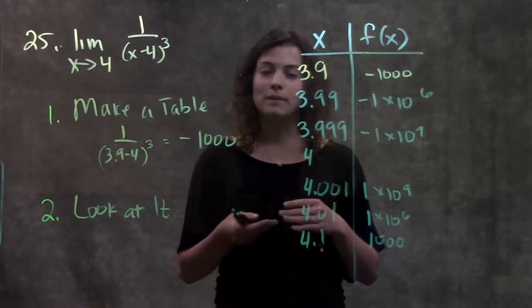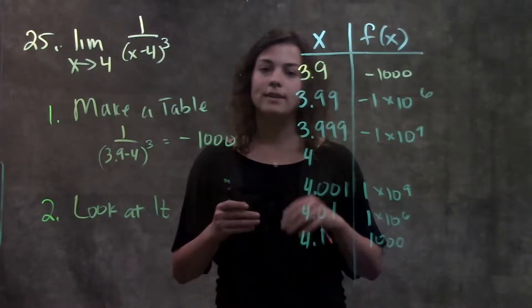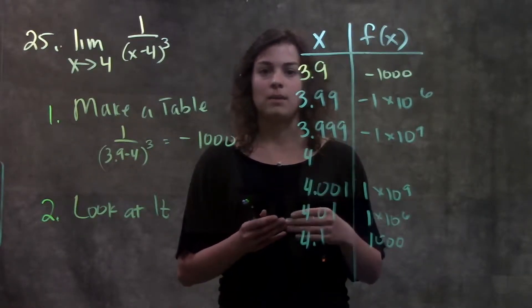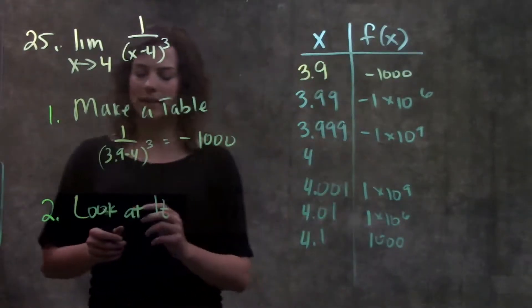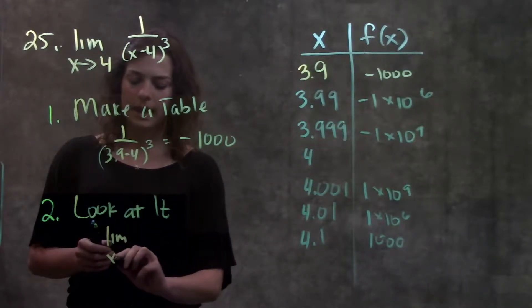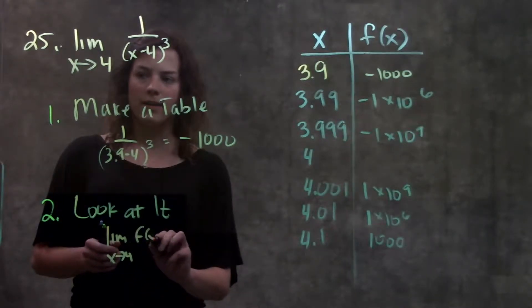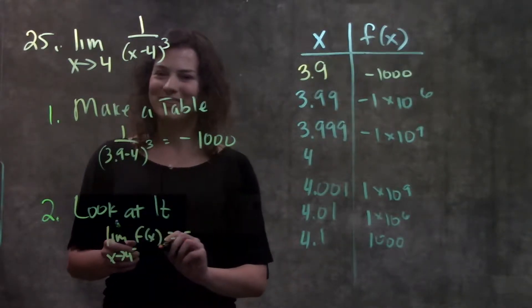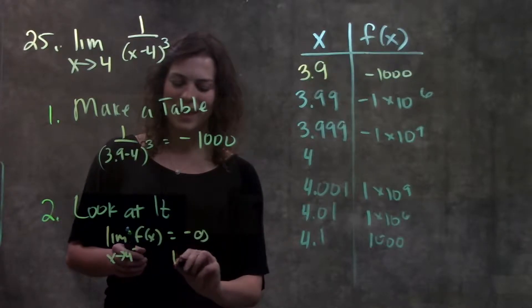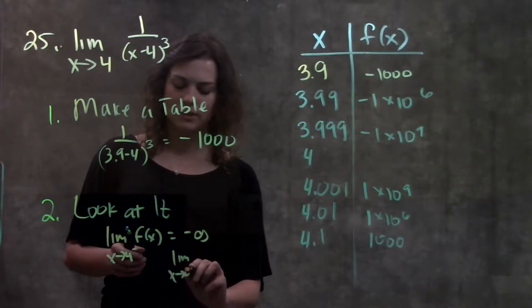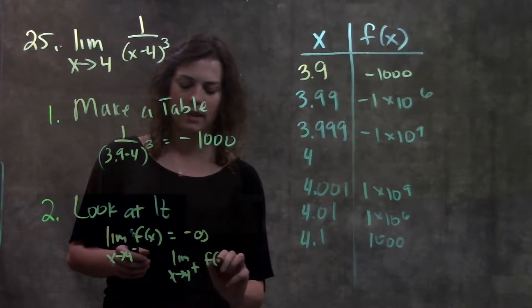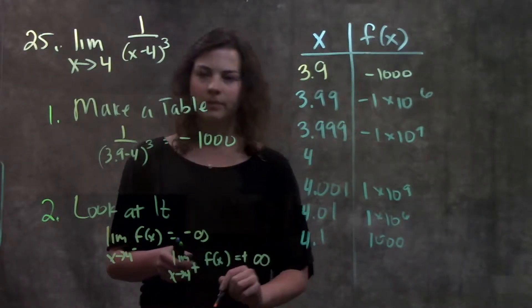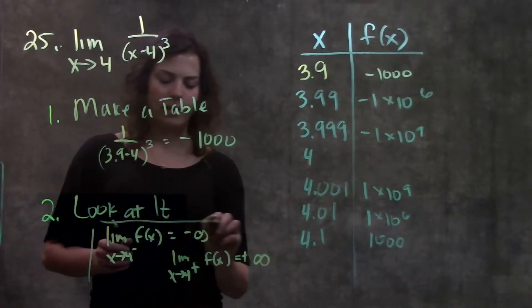This is a case where a limit doesn't exist because the left hand side does not equal the right hand side, but the left side limit and the right hand side limit both exist. So the way you write this is: limit as x approaches 4 from the left hand side of this function is equal to negative infinity. And the limit as x approaches 4 from the right hand side of the same function is equal to positive infinity. And that would be your final answer.